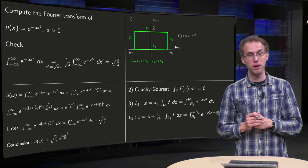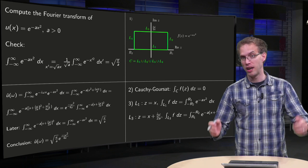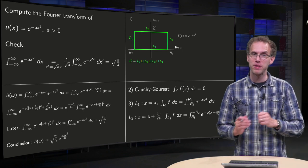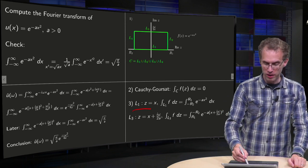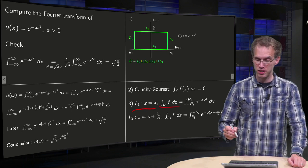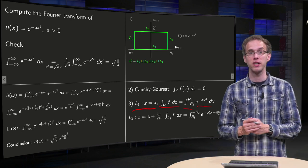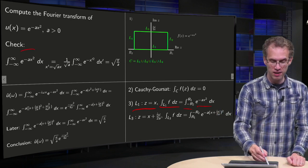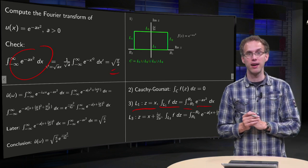Then the second step: Cauchy-Goursat — well that's easy. f(z) is analytic on and inside the contour; in fact f(z) is analytic everywhere, so the integral equals zero. Step 3: we parametrize L1 and L3. On L1 we parametrize z = x, so our integral along L1 of f(z) dz becomes the integral from -R2 to R1 of e^(-ax²) dx, and later on we will send R1 and R2 to infinity, so we get exactly the integral we know the answer to.